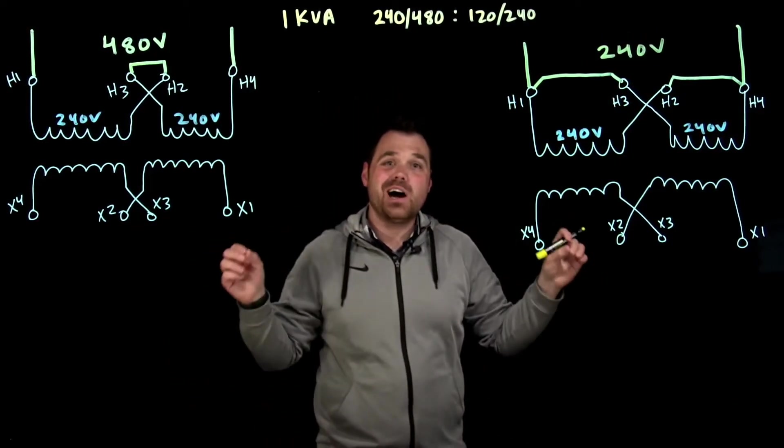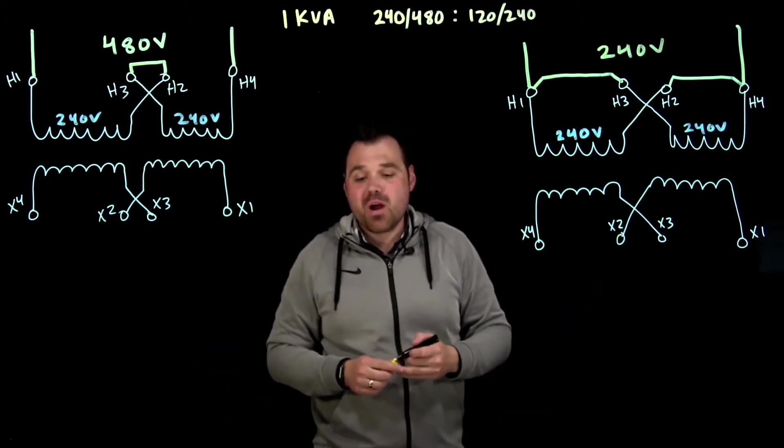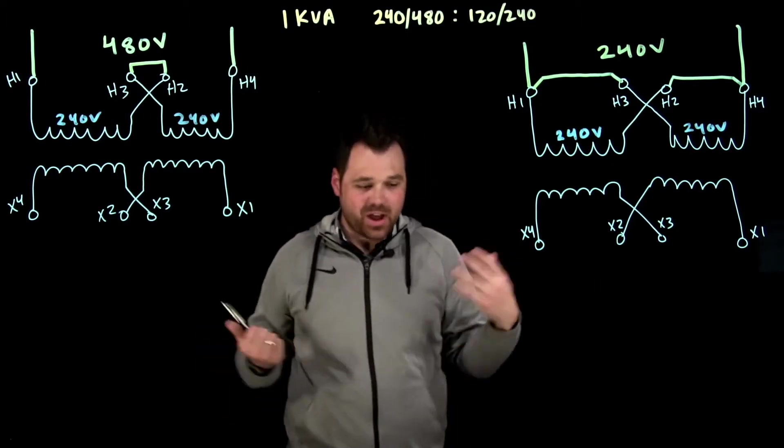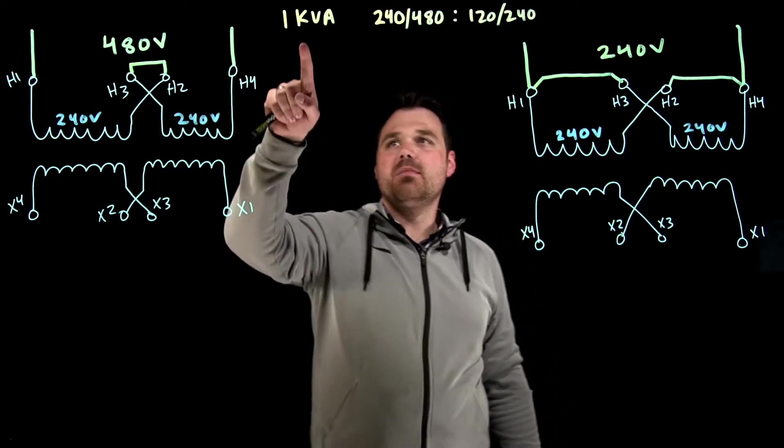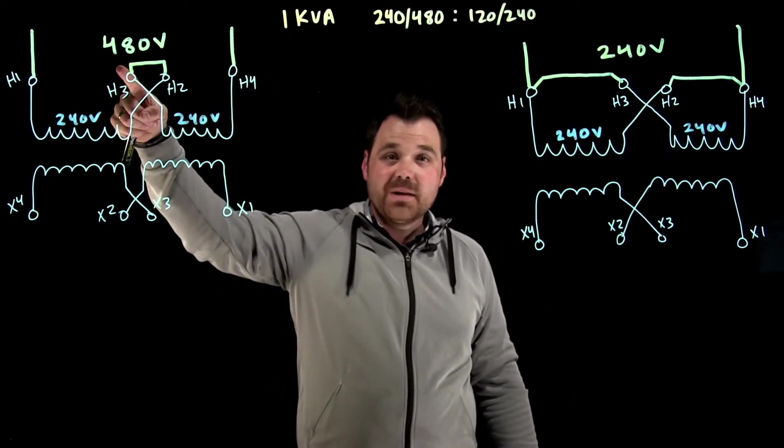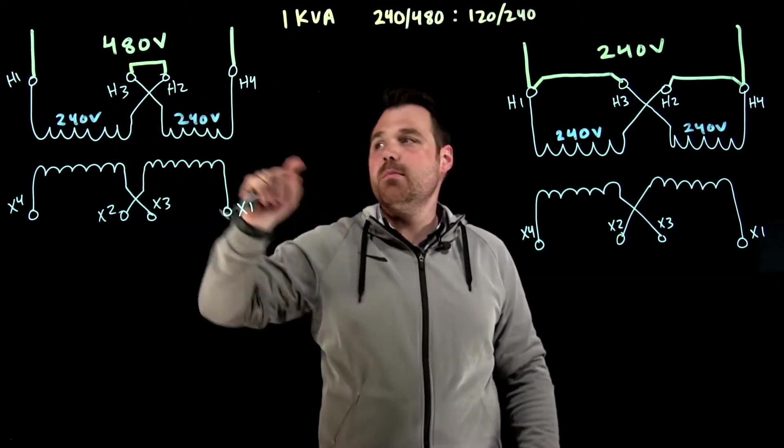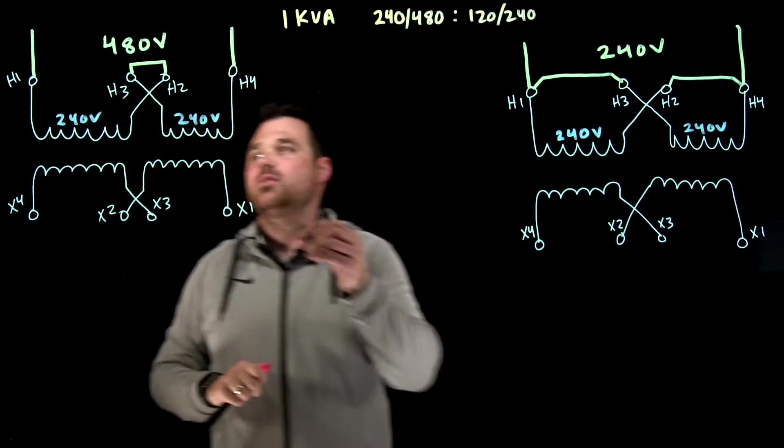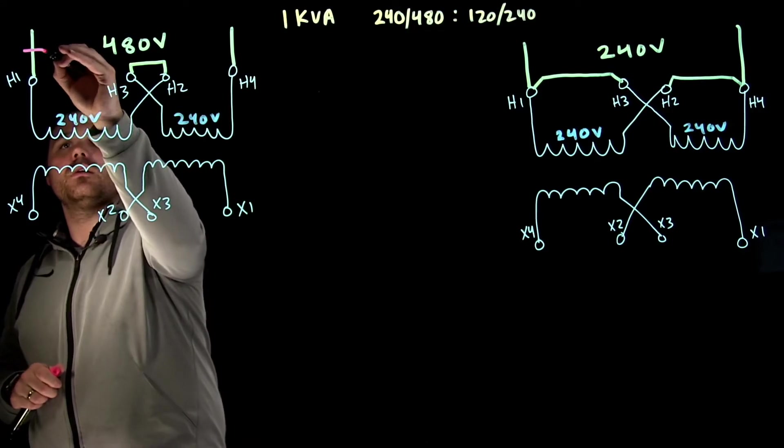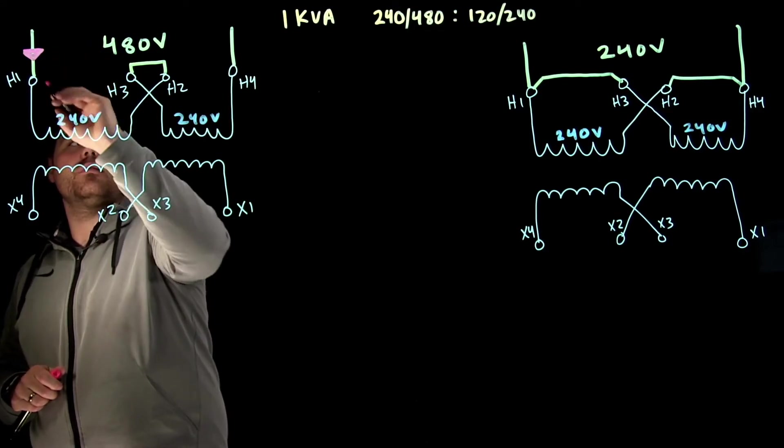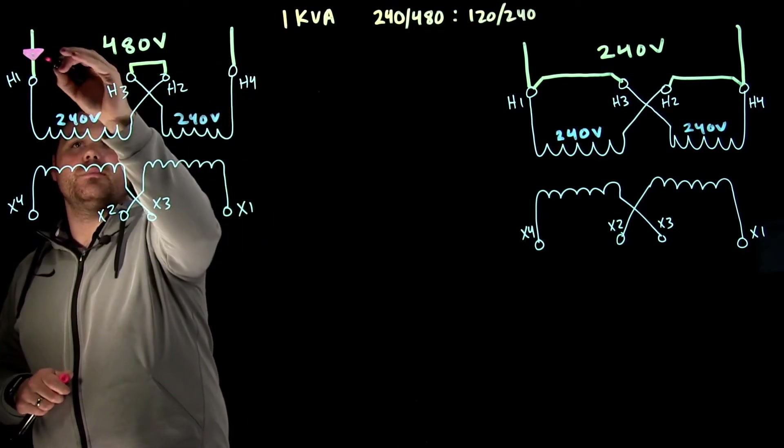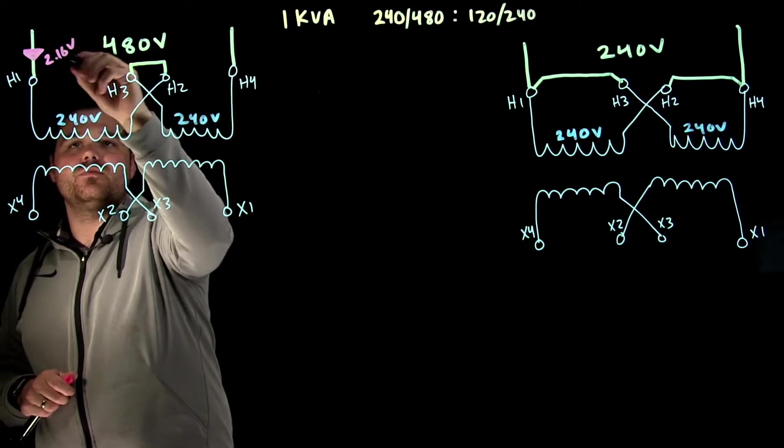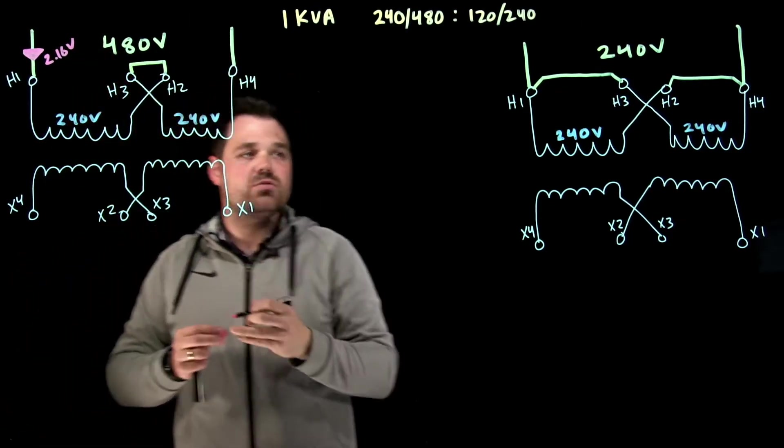but it would actually be a higher current. Now where you would figure out the current rating for that is of course, by taking my 1000 VA divided by 480, that's gonna give me my current flowing through this series connection. So that would probably be 1000 divided by 480, that'd be about 2.16 volts flowing through in series through the whole thing,